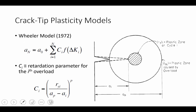With those variables, we can apply a model such as Wheeler's model that helps us to define the size of our plastic zone and the amount of retardation or arrestment of crack growth rates. In Wheeler's model, A_I is equal to A_not plus the sum of C_I times our stress intensity range equation, where C_I is the parameter for the I-th overload.